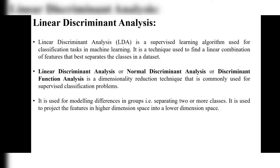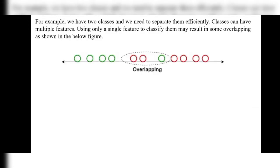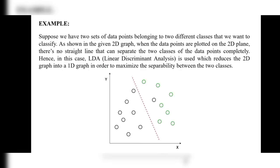LDA is mainly and commonly used for supervised classification problems — it separates the classes in a dataset. For example, when we have two classes and need to separate them efficiently, classes can have multiple features. Using only a single feature to classify them may result in some overlapping. When separating two classes, you should compare all the features; if we compare only one feature, it will be overlapped.